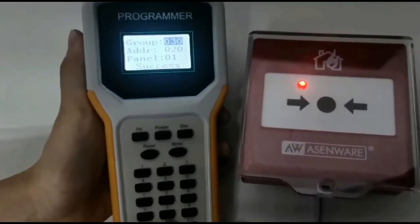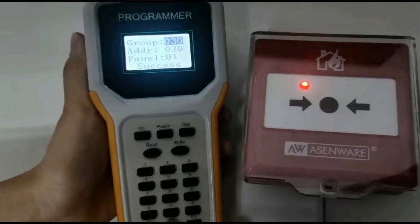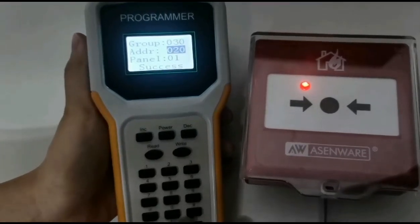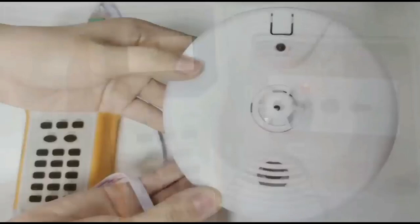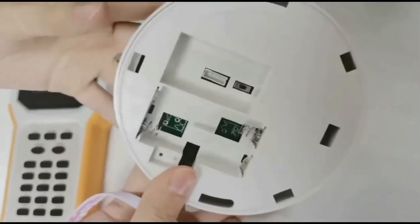Note: maximum group is 30, maximum address is 20. Now we code for wireless mode heat detector.